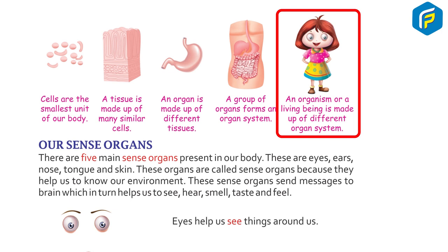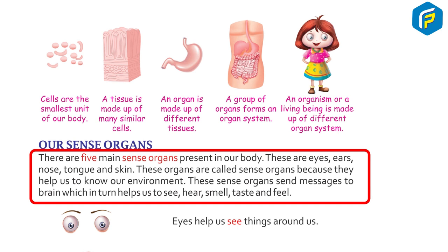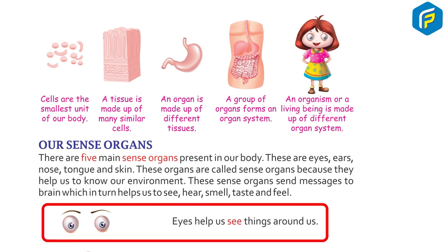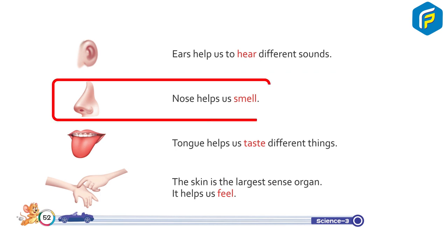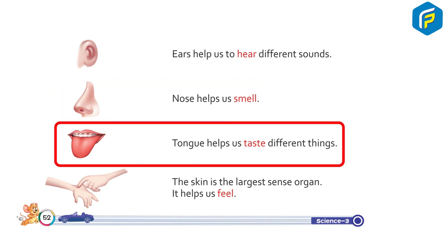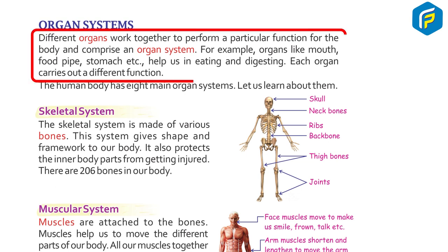An organism or living being is made up of different organ systems. There are five main sense organs in our body: eyes, ears, nose, tongue, and skin. These organs are called sense organs because they help us to know our environment. They send messages to the brain, which helps us see, hear, smell, taste, and feel. The skin is the largest sense organ; it helps us feel.